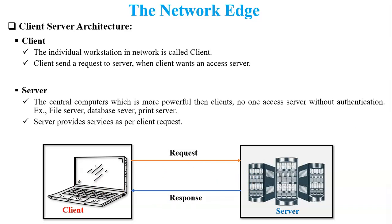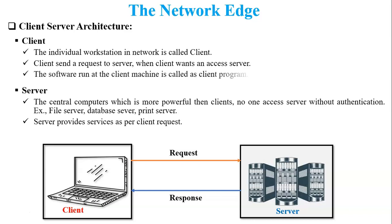Here is one example of how client and server work with each other. For example, any user who wants to access a Facebook server from anywhere in the world will try to access the Facebook server. First, the user will type facebook.com and try to access the login page. A request is sent from the client to the server, and the server provides a response and opens the Facebook login page on the client side. This is one client-server architecture scenario.